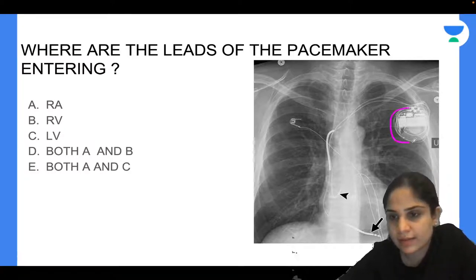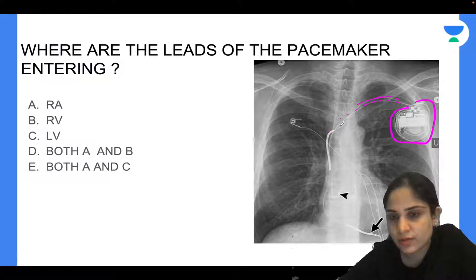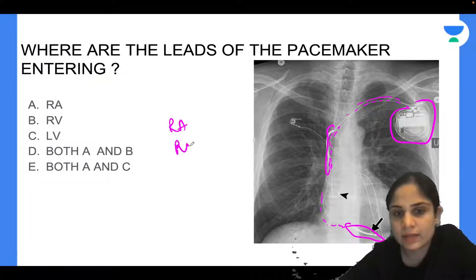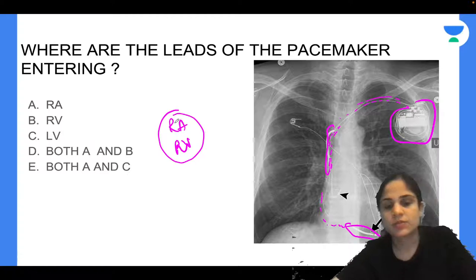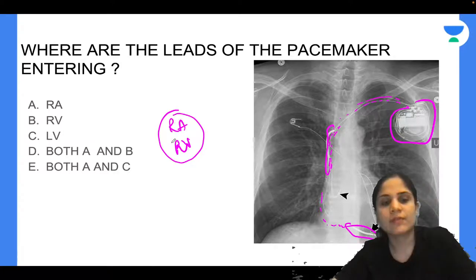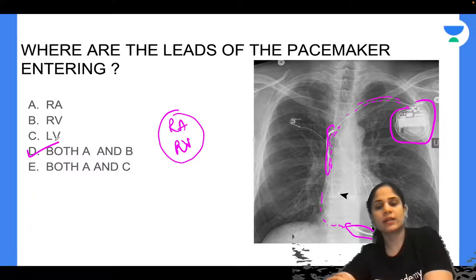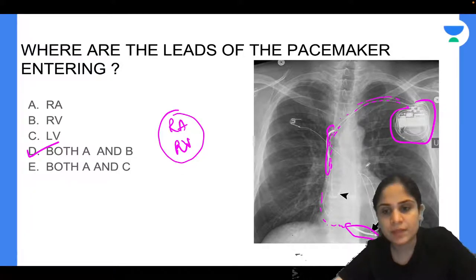From the lead generator (battery/pacemaker), follow the electrodes: one lead goes to the right parasternal area ending in the right atrium; the second lead goes down into the right ventricle. So the answer is both right atrium and right ventricle. Note: pacing is always on the same side — right atrium with right ventricle, or left atrium with left ventricle. Never one atrium and contralateral ventricle.